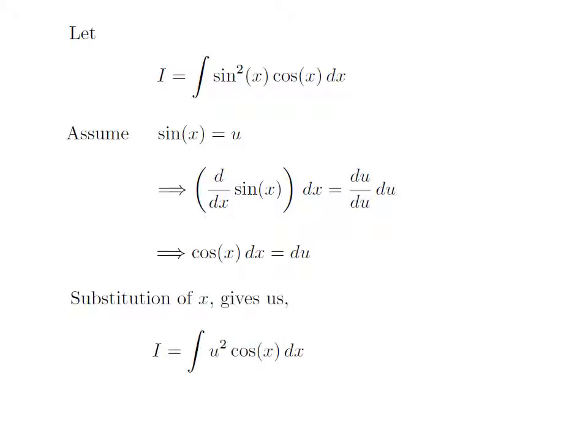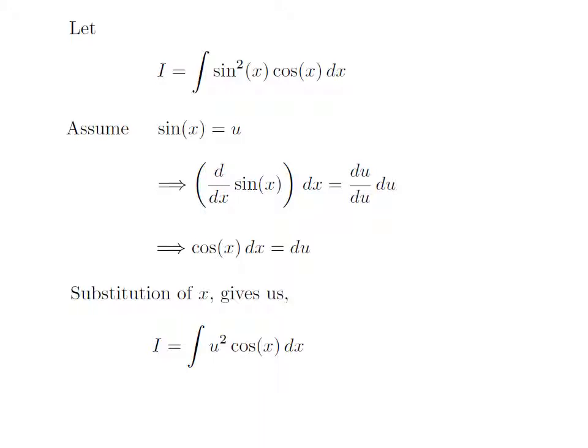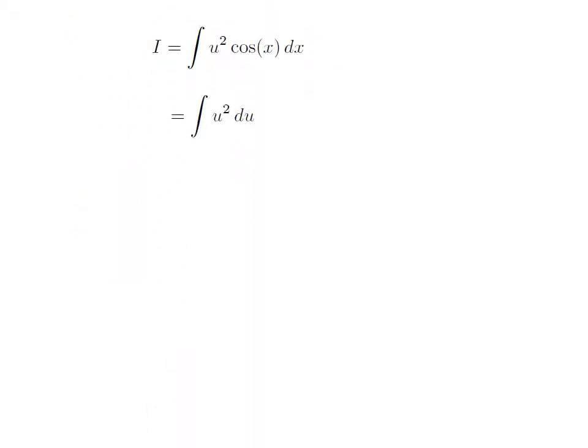Substituted sine of x in I by our assumed value, now the integration I has become integration of square of u into cosine of x into differential of x. As cosine of x into differential of x is equal to differential of u, so substituted cosine of x into differential of x with differential of u, we got I is equal to integration of square of u with respect to u.